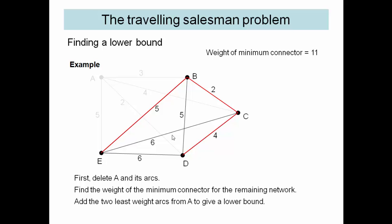And then we add the two smallest, well you can just faintly see them here, the two smallest of the two and the three. So that gives us a total lower bound of 16.